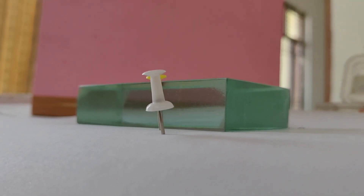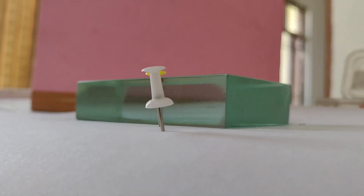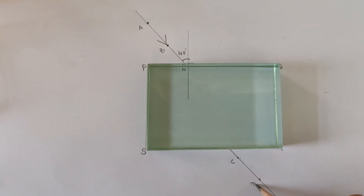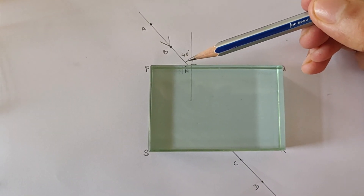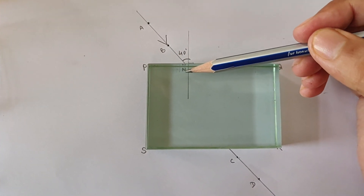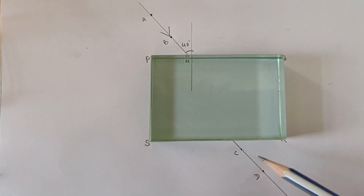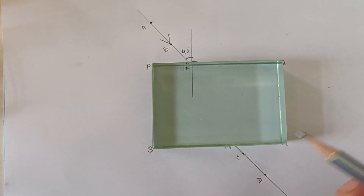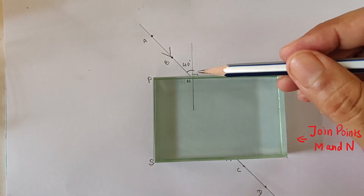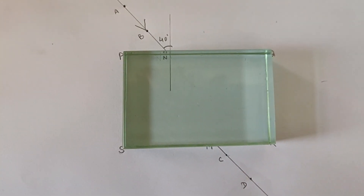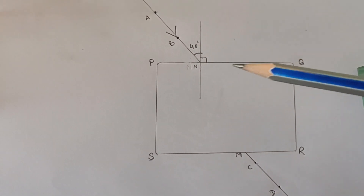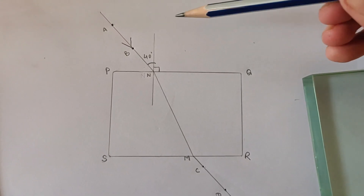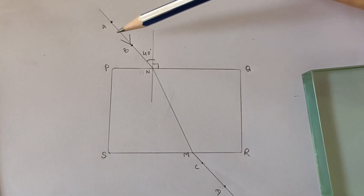All four pins now appear to be in a straight line. We will remove the pins and draw lines joining those points, considering them as points C and D. This line was cutting surface PQ at point N; similarly, it cuts surface RS at point M. Now we remove the glass slab and join point N to point M.